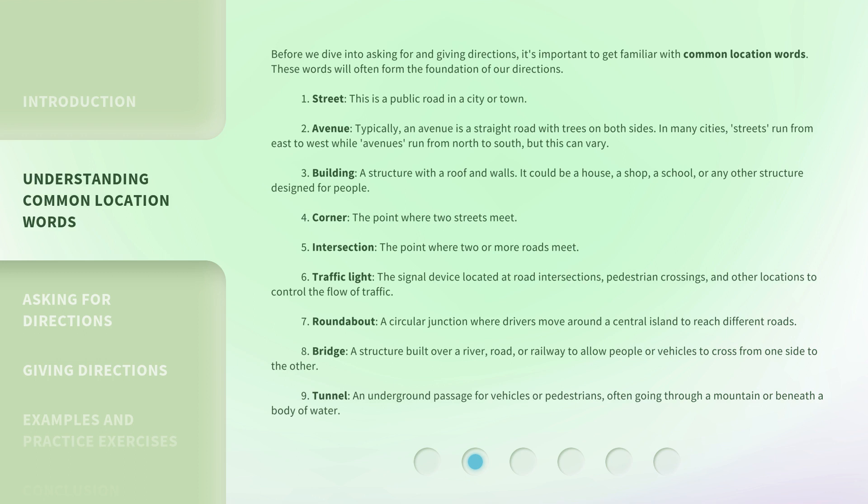4. Corner: the point where two streets meet. 5. Intersection: the point where two or more roads meet. 6. Traffic light: the signal device located at road intersections, pedestrian crossings, and other locations to control the flow of traffic. 7. Roundabout: a circular junction where drivers move around a central island to reach different roads. 8. Bridge: a structure built over a river, road, or railway to allow people or vehicles to cross from one side to the other. 9. Tunnel: an underground passage for vehicles or pedestrians, often going through a mountain or beneath a body of water.